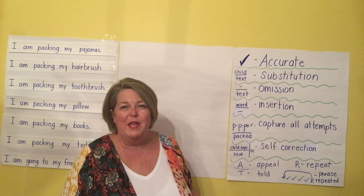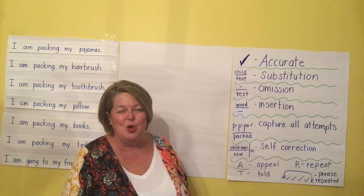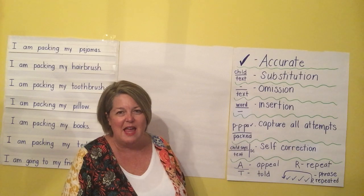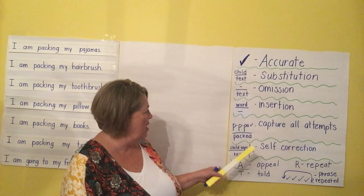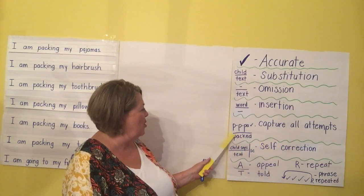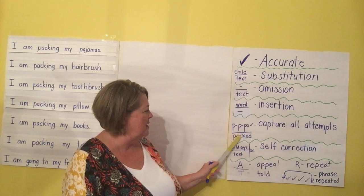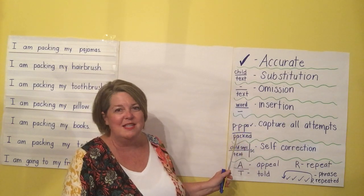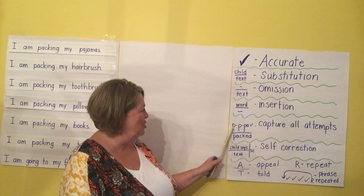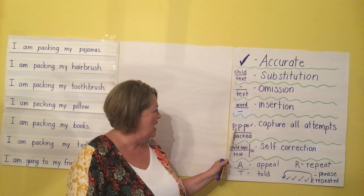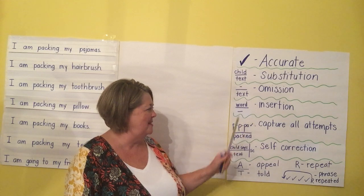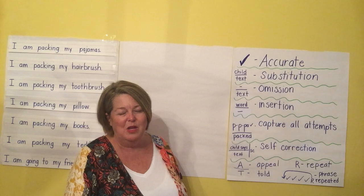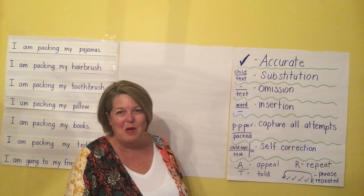Another important thing is to capture all the attempts the child makes. If a child is saying a word slowly, making any sound or any part of the word, you would capture all of those attempts. So instead of just giving the child a checkmark because he eventually got the word 'packed,' it's important for me to know that he didn't know it right away — he made three tries before he got it. He said 'pa, pa, pa, packed.' That's important because you know the child is attending to the first sound, and then they were able to go all the way through the word.